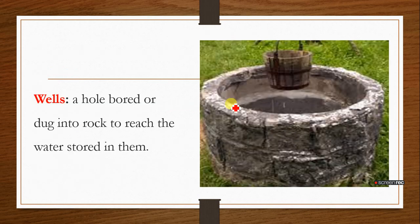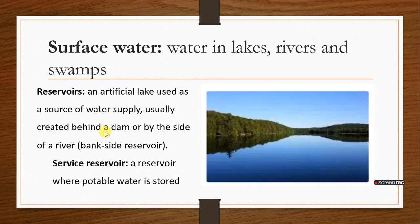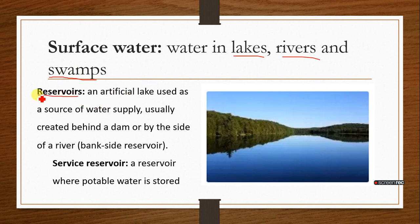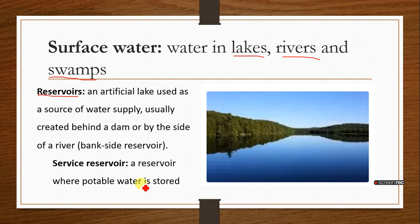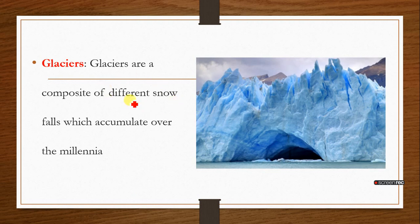The second source of water is wells, which are holes bored or dug into rocks to reach the water stored in them. We also have surface water — waters in lakes, rivers, and swamps — which are also fresh water. On lakes, rivers, and swamps you can build a dam or a reservoir. A reservoir is an artificial lake used as a source of water supply, usually created behind a dam or by the side of a river bank, built strictly to supply water. A service reservoir is a reservoir where potable water is usually stored.